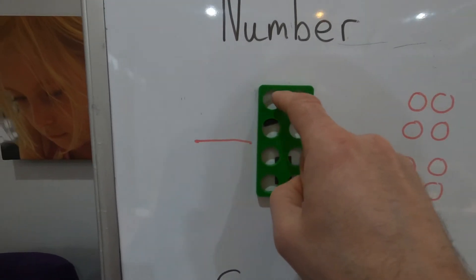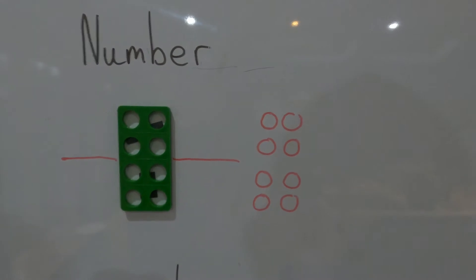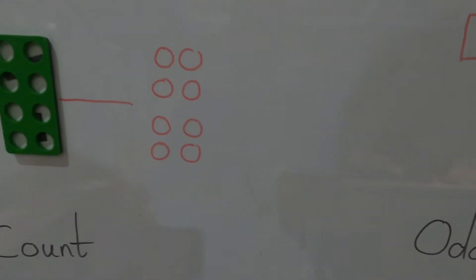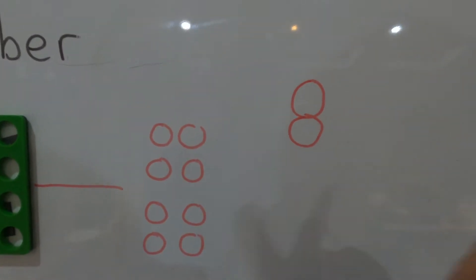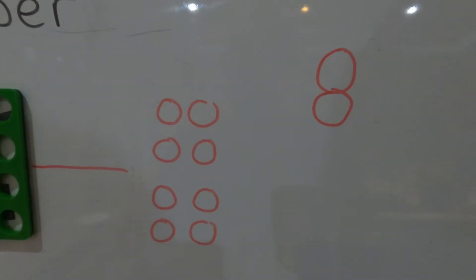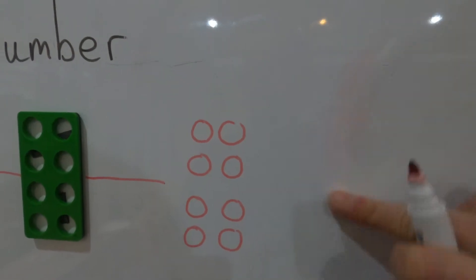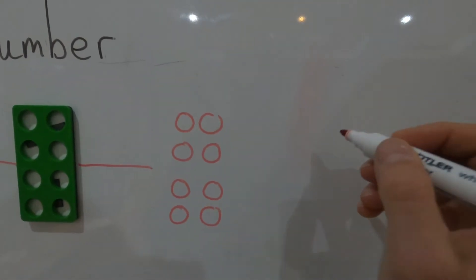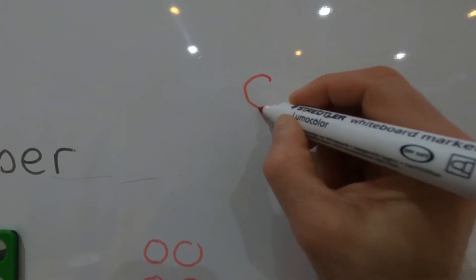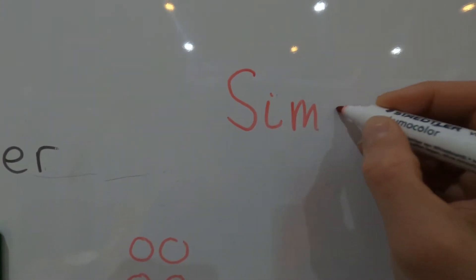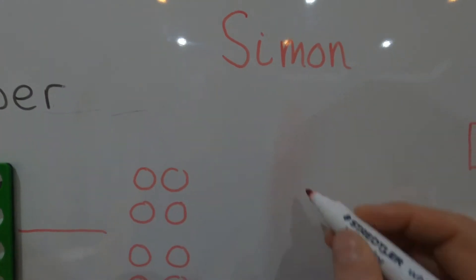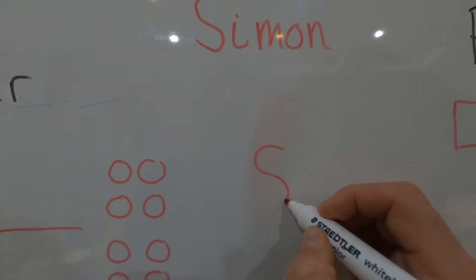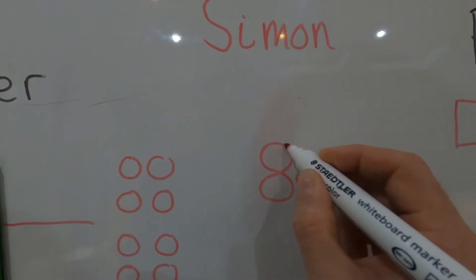Drawing the number eight is a little bit tricky. Some people do circle and circle, but we don't want to do that. We want to learn to draw it like we're really smart. We start with an S, like in Simon. The S is a bit like an eight. If I do an S like this and then go back to the top, that's an eight.